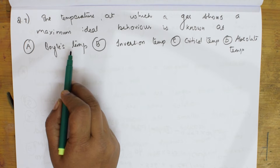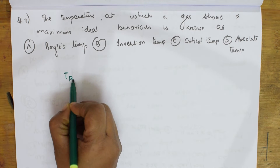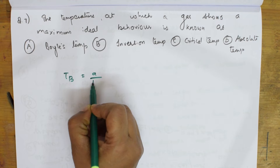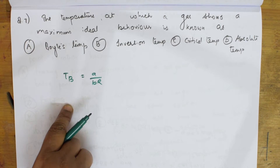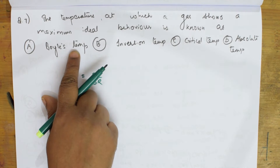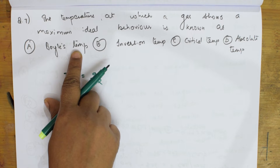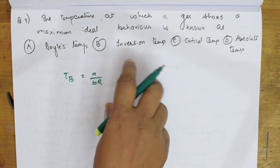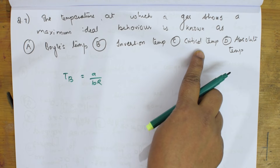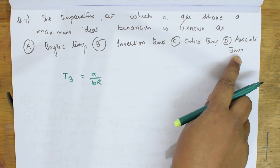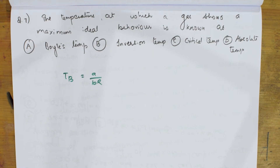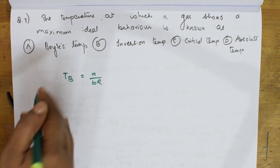Boyle's temperature is also related to van der Waals constants by the formula: T_B = a / (bR), where a and b are van der Waals constants. To summarize: Boyle's temperature — real gas shows ideal behavior; inversion temperature — gas neither heated nor cooled; critical temperature — gas cannot be liquefied; absolute temperature — measured from absolute zero. The correct answer is Boyle's temperature.